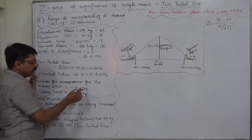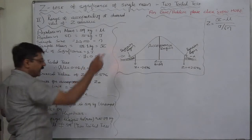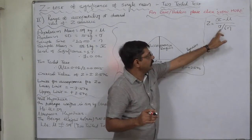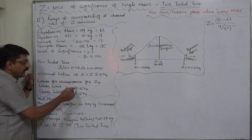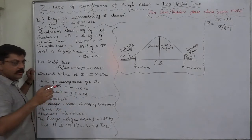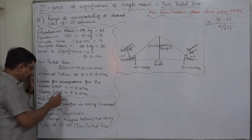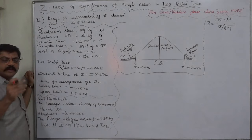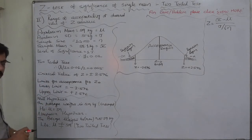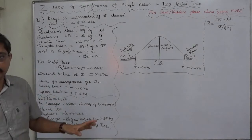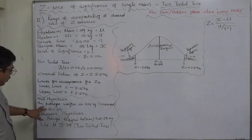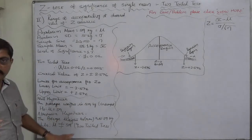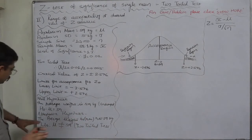The interpretation of these two limits is if the calculated value of Z on the basis of sample mean, population mean, standard deviation and sample size comes to less than minus 2.576, the null hypothesis should be rejected. Or if it comes to greater than positive 2.576, then also we have to reject the null hypothesis. What is the null hypothesis? The null hypothesis is always of no change. So the null hypothesis is the average weight is still 59 kilograms. That is unchanged.